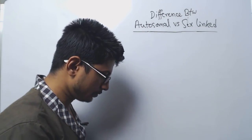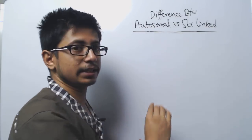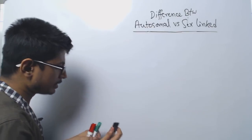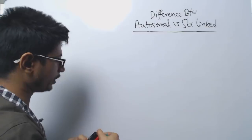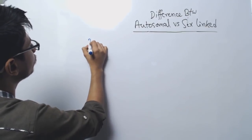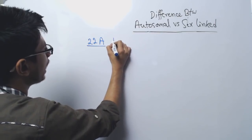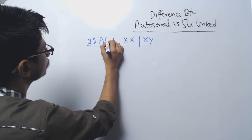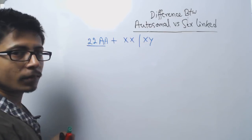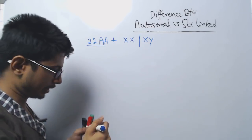If the gene is present in any of the sex chromosomes in our body, that will be known as the sex-linked inheritance. If you look at the chromosomal pattern of our body, we can see that we have 22 pairs of autosomes and one pair of sex chromosomes.